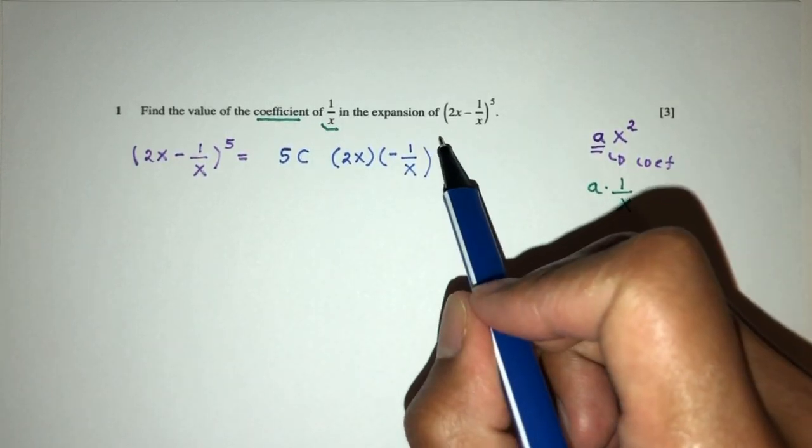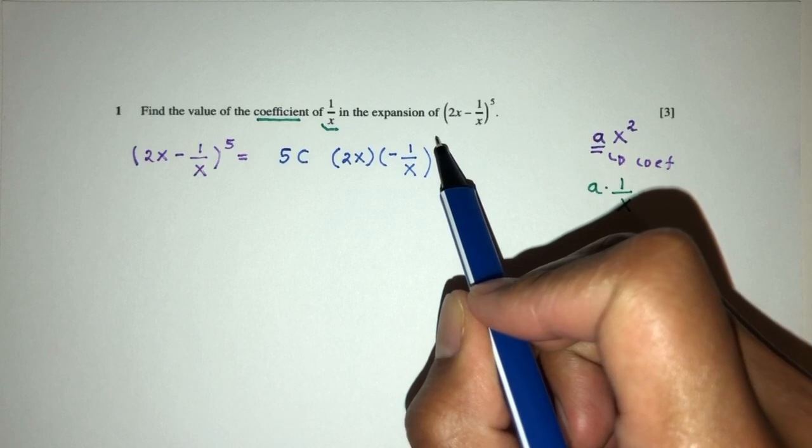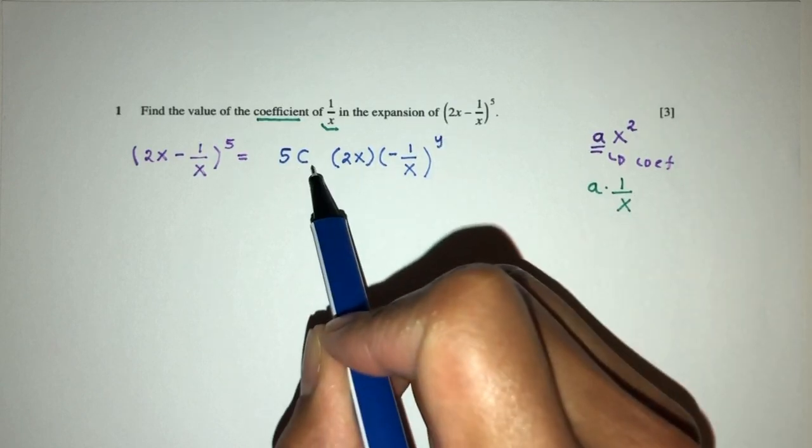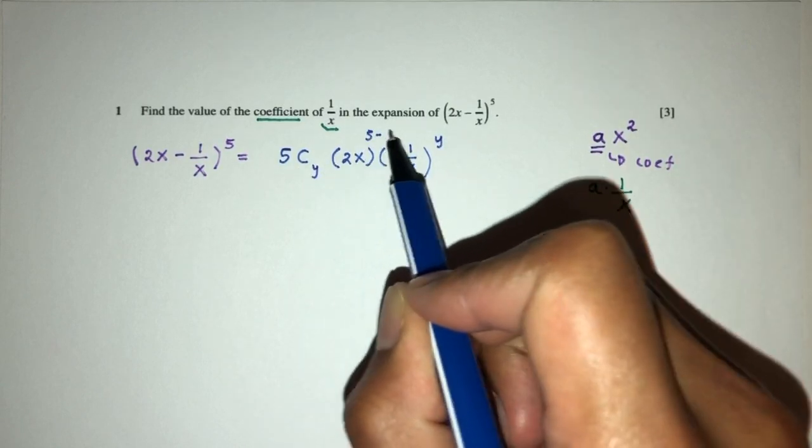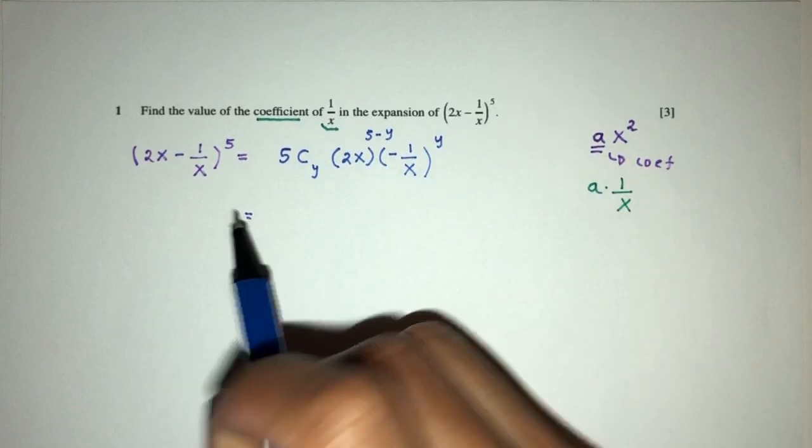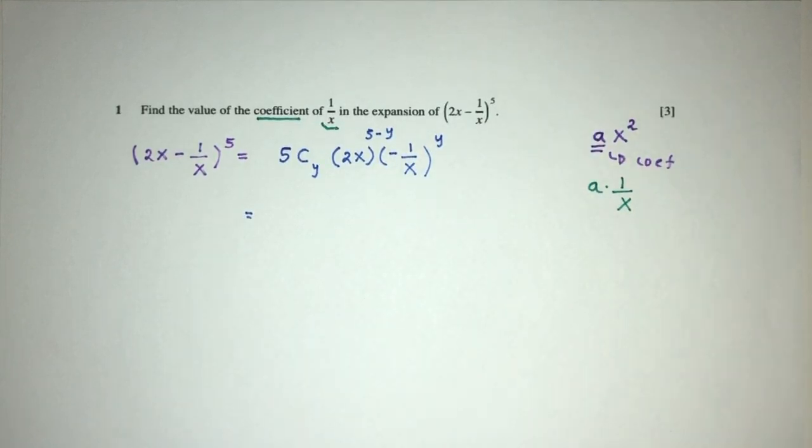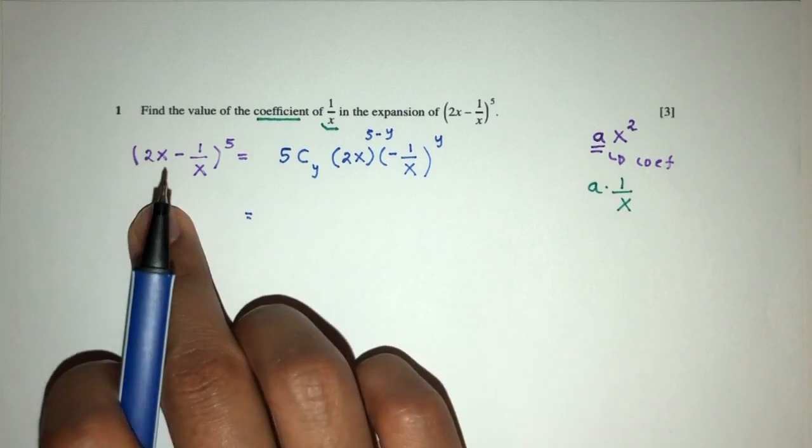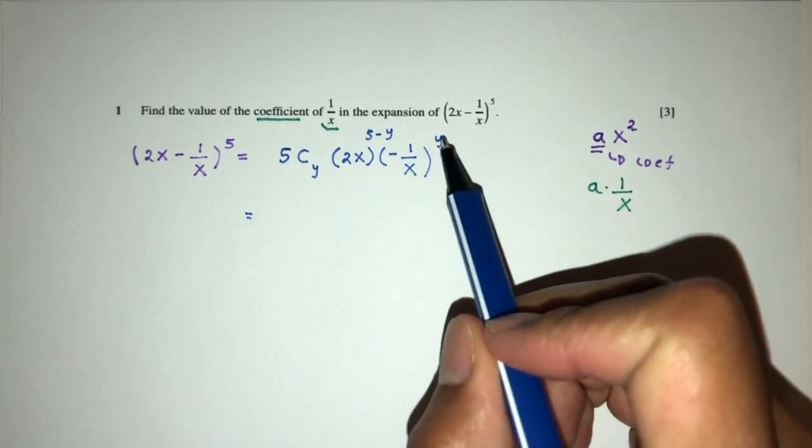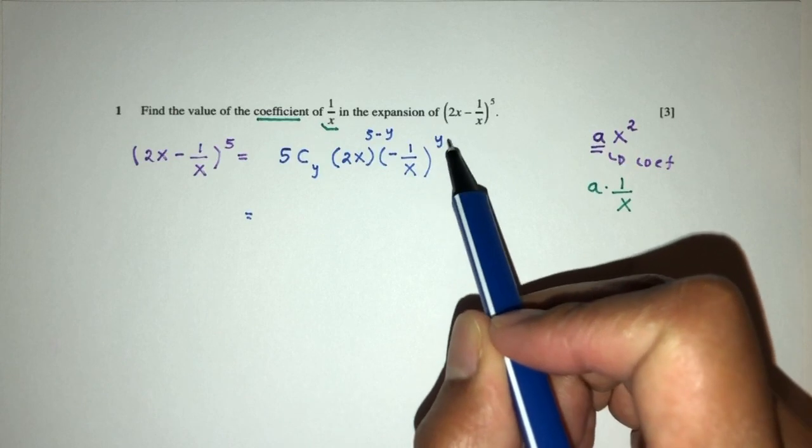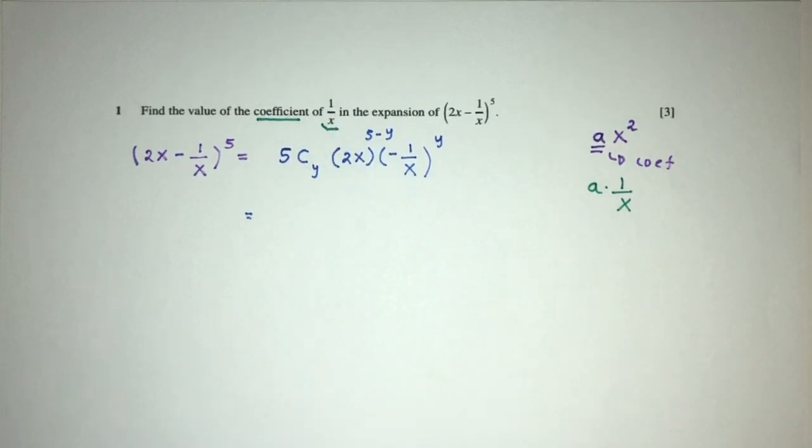Now, if I choose the power here, for example, let's call this y. This will also be y, and that will be 5 minus y. This is how you would expand one term of this expansion. I have to choose y such that the term will have something in 1 over x. So let's see how we can do this.